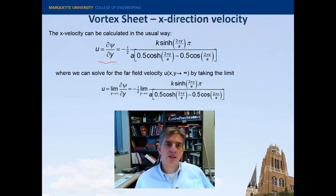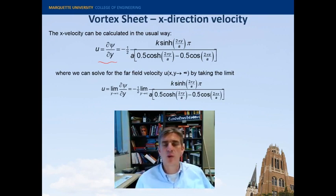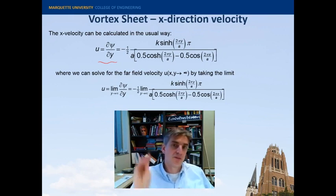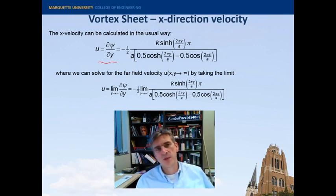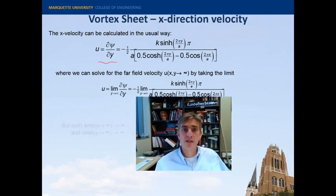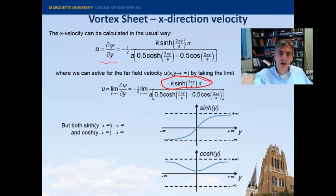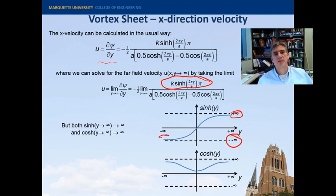And then we can look in the far field. So as y goes to infinity, what is the locally induced velocity out there in the far field? So what I'll do is I will let y go to infinity and take the limit of this as y goes to infinity. Well, if you recall your basic trig functions, we've got a bit of a problem because hyperbolic sine, as y goes to infinity, it shoots off to infinity, right? In the positive direction, and it shoots off to negative infinity in the negative infinite direction. So that's a problem.